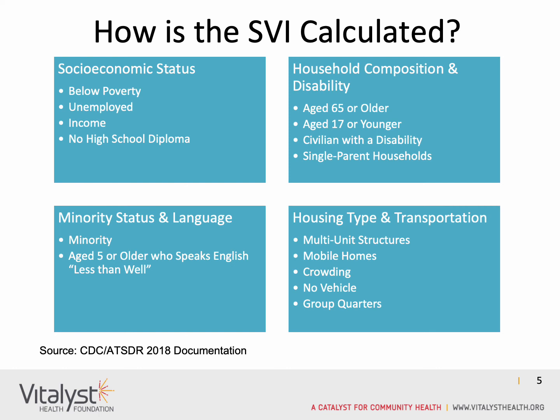They will then try to understand another measure of vulnerability, which is housing — looking at how many households are living in a multi-unit structure, in mobile homes, or don't have a vehicle. They then calculate the vulnerability for each of these elements and come up with a single number representing the vulnerability for that specific community.